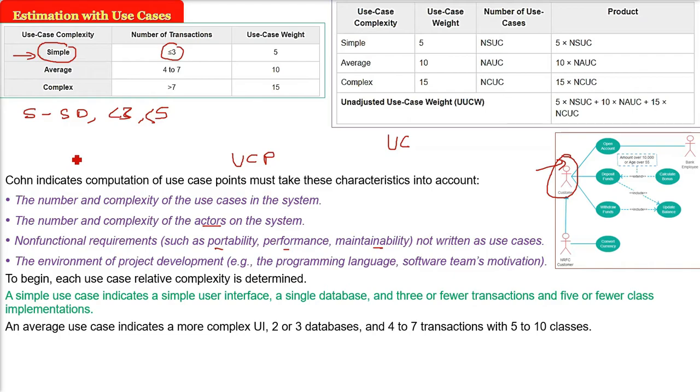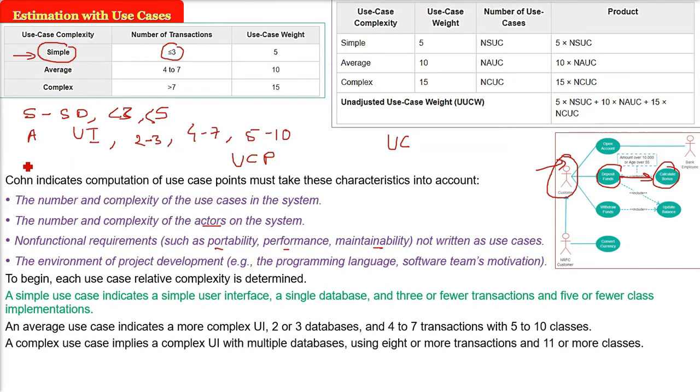An average use case indicates a more complex user interface. It can have two to three databases, unlike the simple one with a single database. Transactions are between four to seven. Five to ten classes will be there.